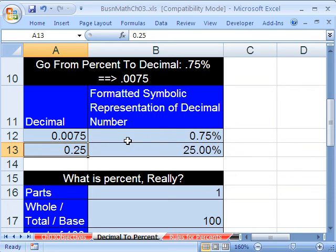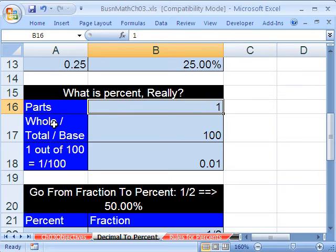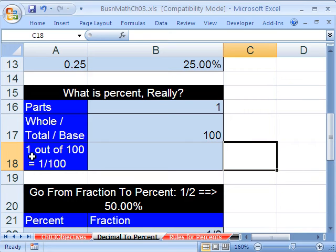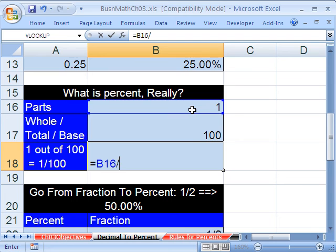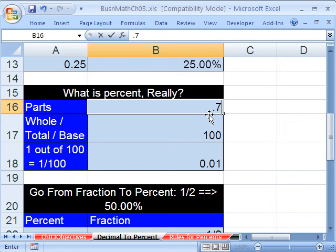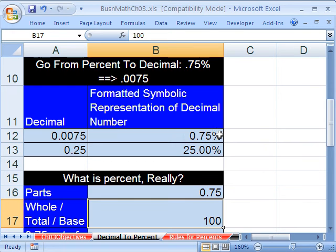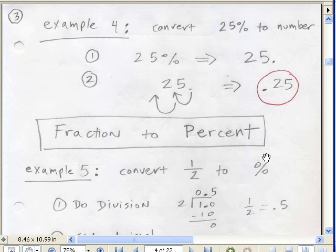We talked about this 0.75%, and sometimes it's confusing. Let's think about what is a percent really. If we have one part, and we have the whole or total or base out of 100, 1 out of 100 equals 1 divided by 100. That really is what a percent is. It's always however many of the things we have out of 100. What if we did 0.75? You take 0.75 and divide it by 100. When I hit Enter, it immediately shows us that that is the decimal equivalent. That relates to that problem we just did.